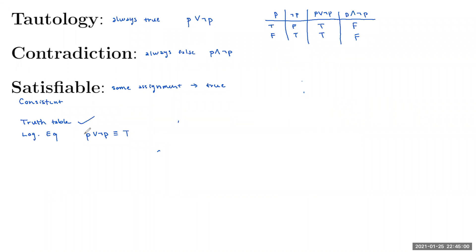If we're just trying to determine whether a compound proposition is satisfiable, another method involves assigning truth values directly. For example, with p and q: if we assign p equals true and q equals true, the compound proposition is true. So in this case we know it's satisfiable. That's how satisfiable works in practice.